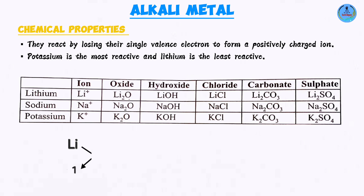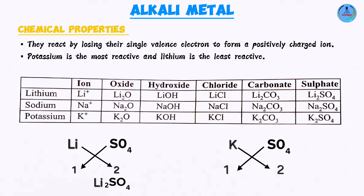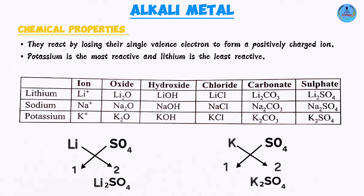For example, lithium has a valency of one and sulfate ions have a valency of two — when these interchange you get Li₂SO₄. Similarly, potassium has a valency of one and sulfate has a valency of two, giving K₂SO₄. So if you memorize the formulae for lithium compounds, you can apply the same pattern to sodium and potassium. That brings us to the end of this lesson.